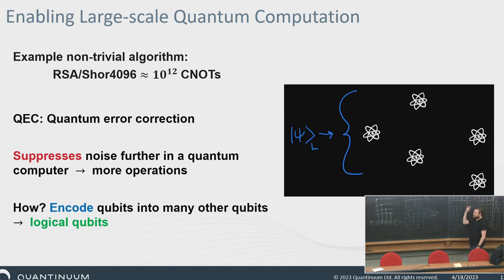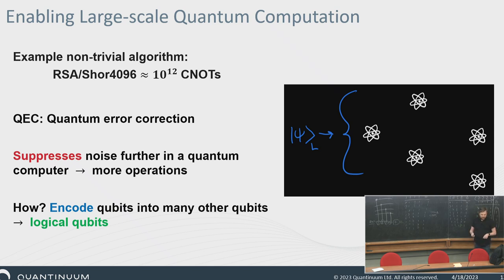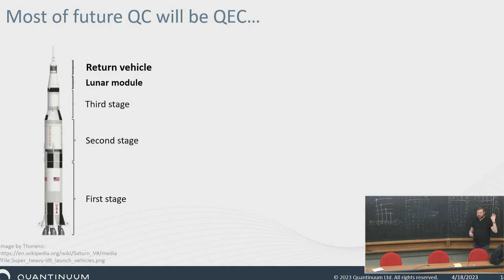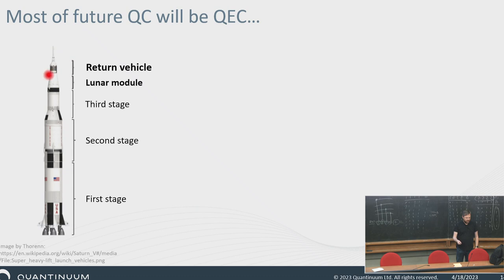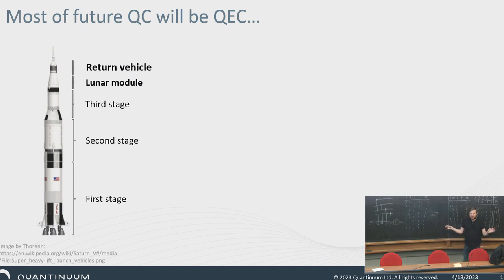Quantum error correction is all about spreading the information across multiple qubits — or qudits if you get fancy — and using that to suppress noise. You might think of future large-scale devices like the Saturn V rocket, where the majority of the thing is just trying to get you to the moon. It's not actually the interesting science — that's in the return vehicle. Most of the machine is just trying to get you there, and that's what quantum error correction will be for large-scale devices. A large fraction of it is just doing quantum error correction, doing fancy identities.